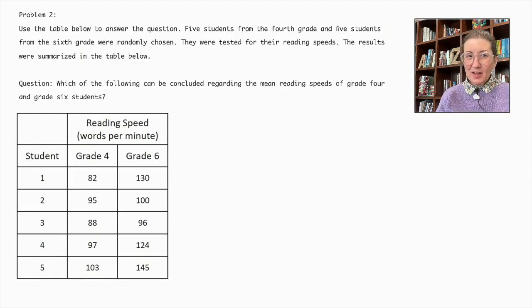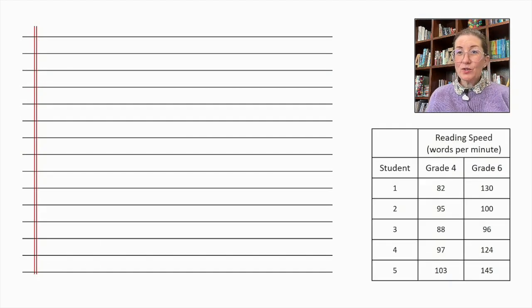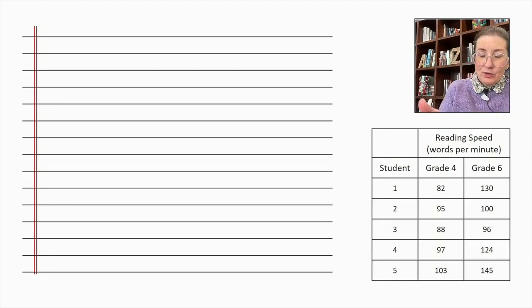Problem number two. Use the table below to answer the question. Five students from the fourth grade and five students from the sixth grade were randomly chosen. They were tested for their reading speeds. The results were summarized in the table below. Which of the following can be concluded regarding the mean reading speeds of grade 4 and grade 6 students? We can use the formula from the first question to find the mean reading speed of both the grade 4 students and the grade 6 students. So, let's do that.